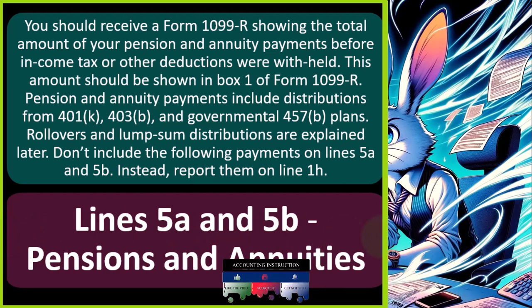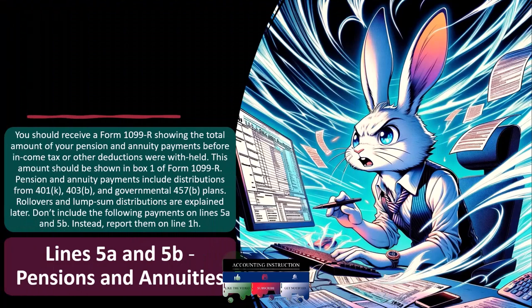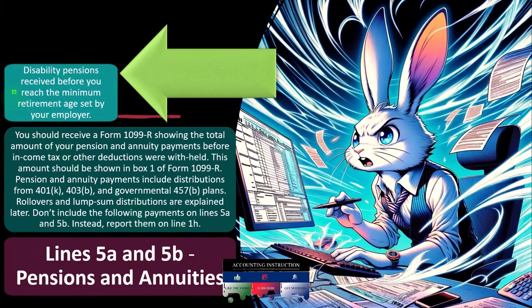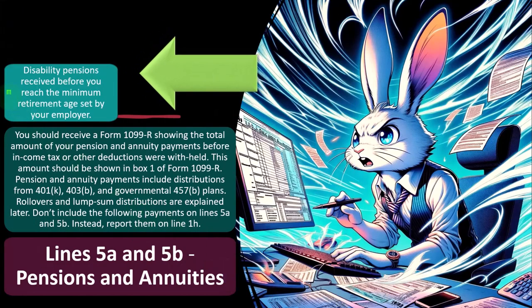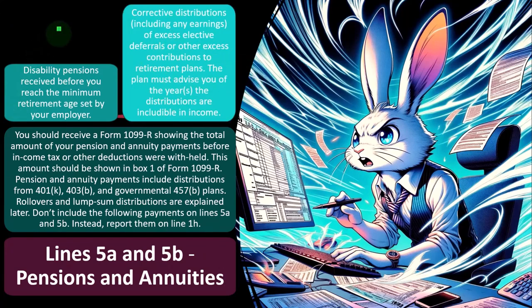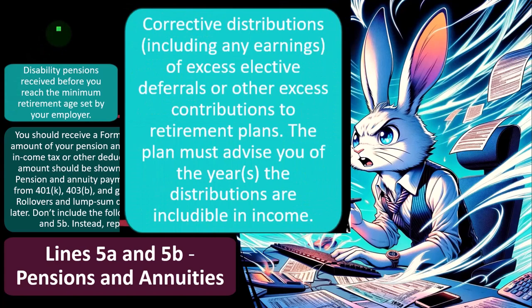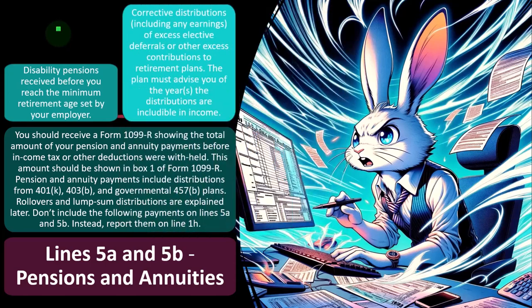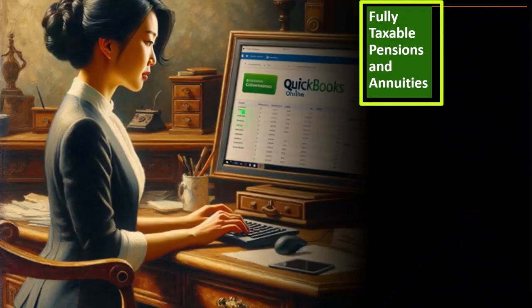Don't include the following payments on lines 5A and 5B; instead, report them on line 1H: disability pensions received before you reach the minimum retirement age set by your employer, corrective distributions including any earnings of excess elective deferrals or other excess contributions to retirement plans. The plan must advise you of the years the distributions are includable in income.